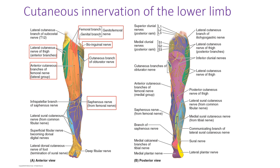For cutaneous innervation of the lower limb: skin over the femoral triangle is innervated by the femoral branch of the genitofemoral nerve. More laterally and superiorly is the lateral cutaneous femoral nerve, a component of the lumbar plexus. The anterior and medial cutaneous branches come from the femoral nerve itself, and there are also cutaneous branches of the obturator nerve. The saphenous nerve runs with the great saphenous vein down to the medial aspect of the heel, supplying the medial aspect of the lower limb.